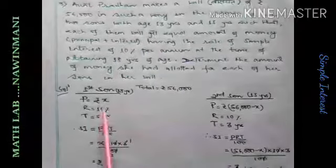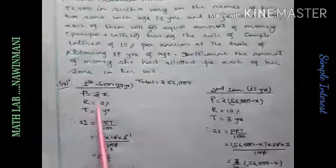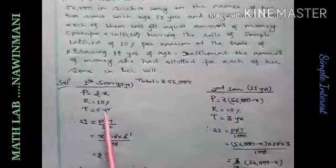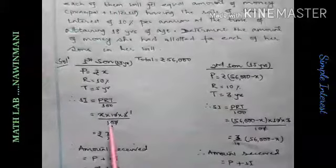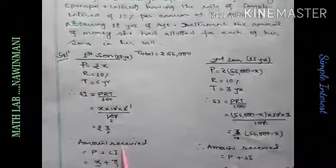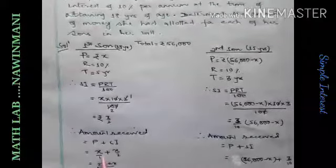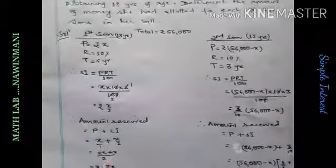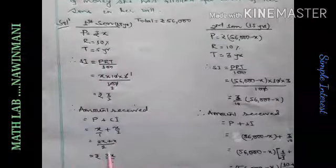Let us see that. For the first son, he gives X rupees. Rate is this much. He is 13 years old. When he reaches 18 years, 5 years pass. So, time will be five years. We calculate. The SI will be X by 2. And then you find the amount. Principal plus SI. X by 1 plus X by 2. Take LCM. 3X by 2. So, first son receives this amount.